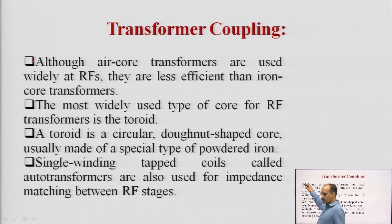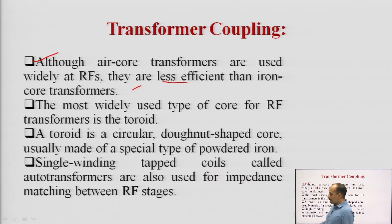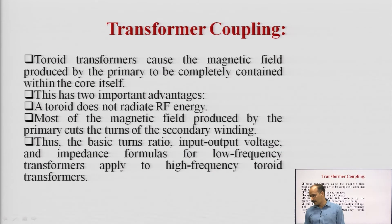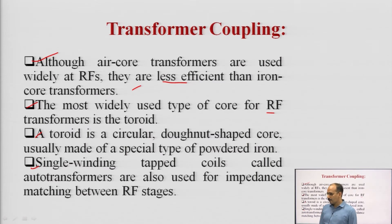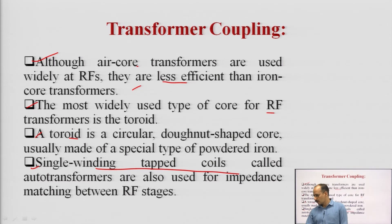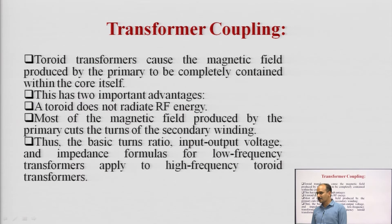Although air core transformers are also used at RF frequencies, they are less efficient than iron core transformers. The most widely used type of core for the RF transformer is the toroid. A toroid is a special kind of structure used for radio frequency transformers. It is a circular donut-shaped core usually made of a special type of powdered iron. Additionally, a single winding tapped coil called the auto transformer is also used for impedance matching between RF stages. So the types are: soft iron core, air core, toroid, and single winding tapped coil auto transformers.